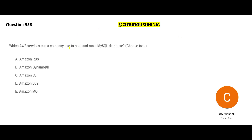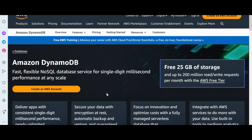Which AWS services can a company use to host and run a MySQL database? DynamoDB is NoSQL — MySQL means it is SQL-based, DynamoDB is NoSQL-based, so NoSQL-based will not work. Applications like Uber use DynamoDB-type databases — high performance databases.